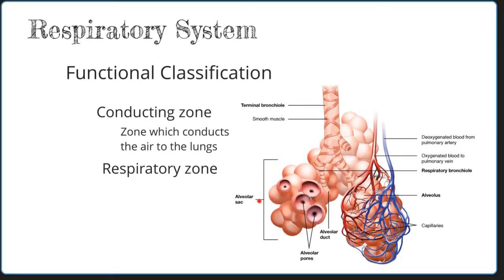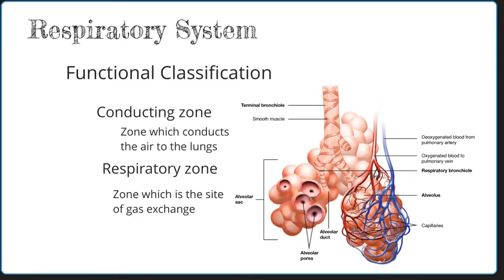The respiratory zone is going to include the very end of the respiratory system. This is going to include those respiratory bronchioles, the alveolar ducts, the sacs, and the alveoli themselves. The capillaries surround these alveoli, and this is where gas exchange is going to occur. The respiratory zone is the site of gas exchange, where oxygen goes from the lungs to the blood, and carbon dioxide goes from the blood to the lungs.